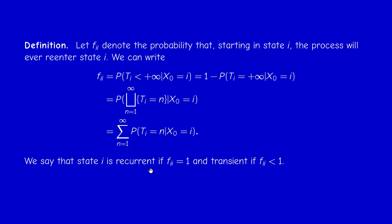We say that state i is recurrent if F_{i,i} equals 1, which means that with probability 1 the system will revisit state i at another time. Otherwise, we say that it is transient — there is a positive probability that the system will never return to state i again. Saying that F_{i,i} is less than 1, or state i is transient, is equivalent to saying that P(T_i = +∞ | X_0 = i) is positive.